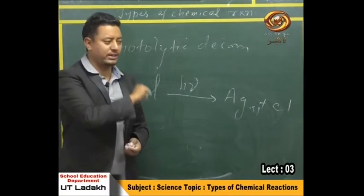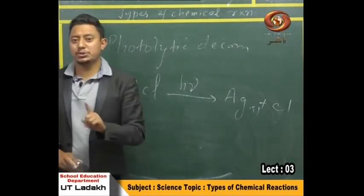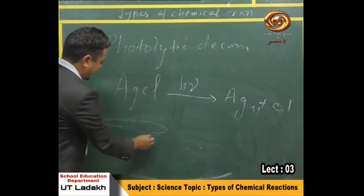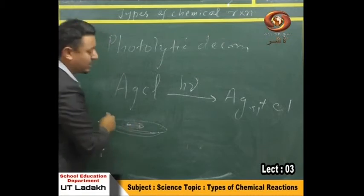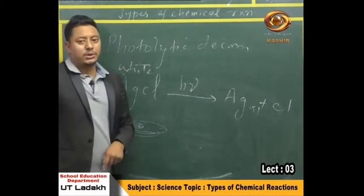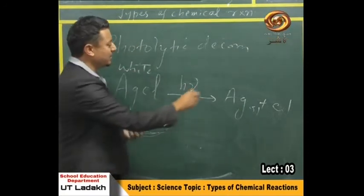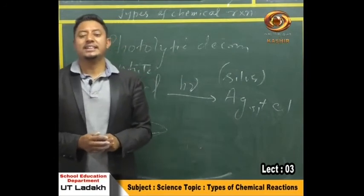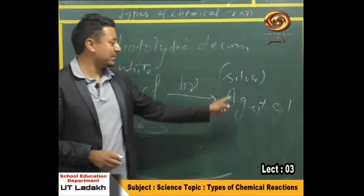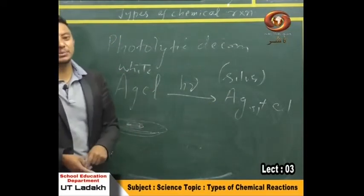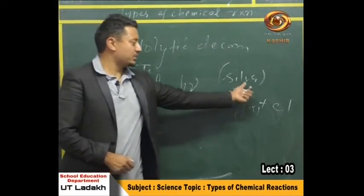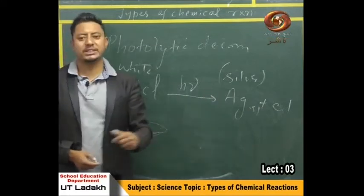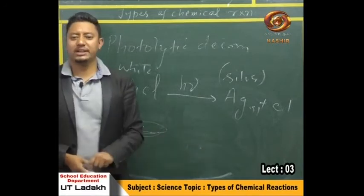This is a very good question in your book. Silver chloride is white in color. When you keep silver chloride in light for some time, you will get a silver-colored deposit on the plate — meaning silver chloride, which was white, has been decomposed to silver metal. Photolytic decomposition is happening here. This reaction is used in black and white photography. If asked about the application of this reaction, you can write: this is used in black and white photography.